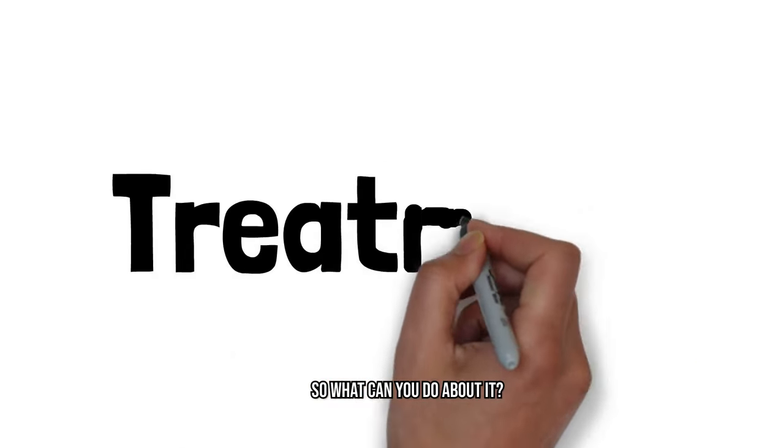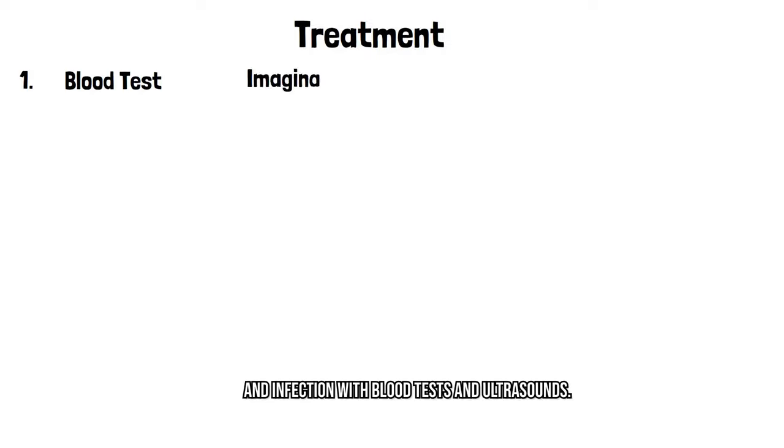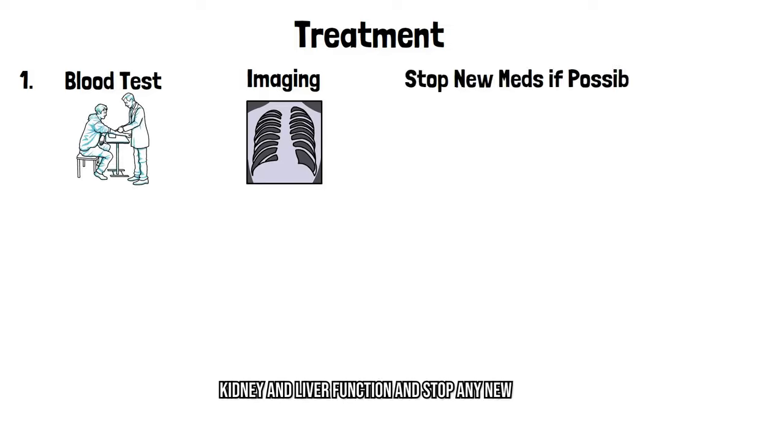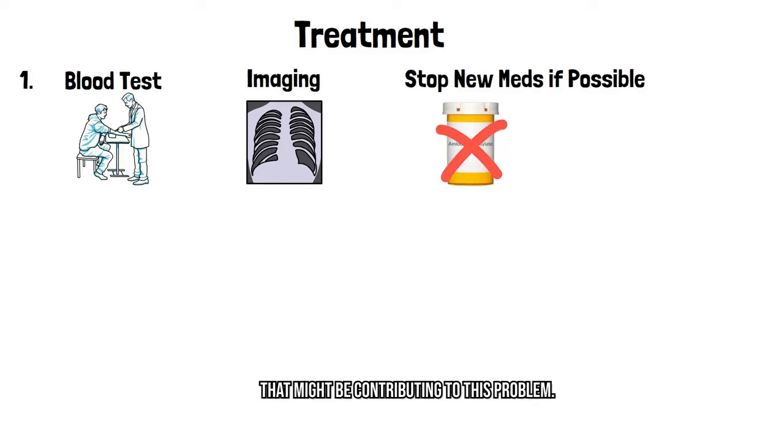So what can you do about it? Here's a basic approach. For acute causes, it's important that we rule out deep vein thrombosis and infection with blood tests and ultrasounds, check for the heart, kidney, and liver function, and stop any new medications that might be contributing to this problem.